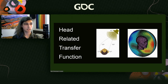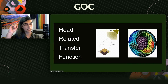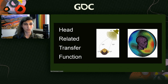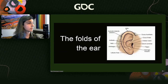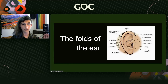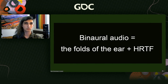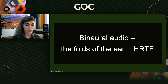The HRTF is really just the difference between when you play a sound on one side of your head and that ear hears it, versus when you play it on the opposite side and the same ear hears it — it's how the shape of the head interacts with audio. That combines with the folds of the ears to create binaural audio, which simulates the shape of the head and the folds of the ears.